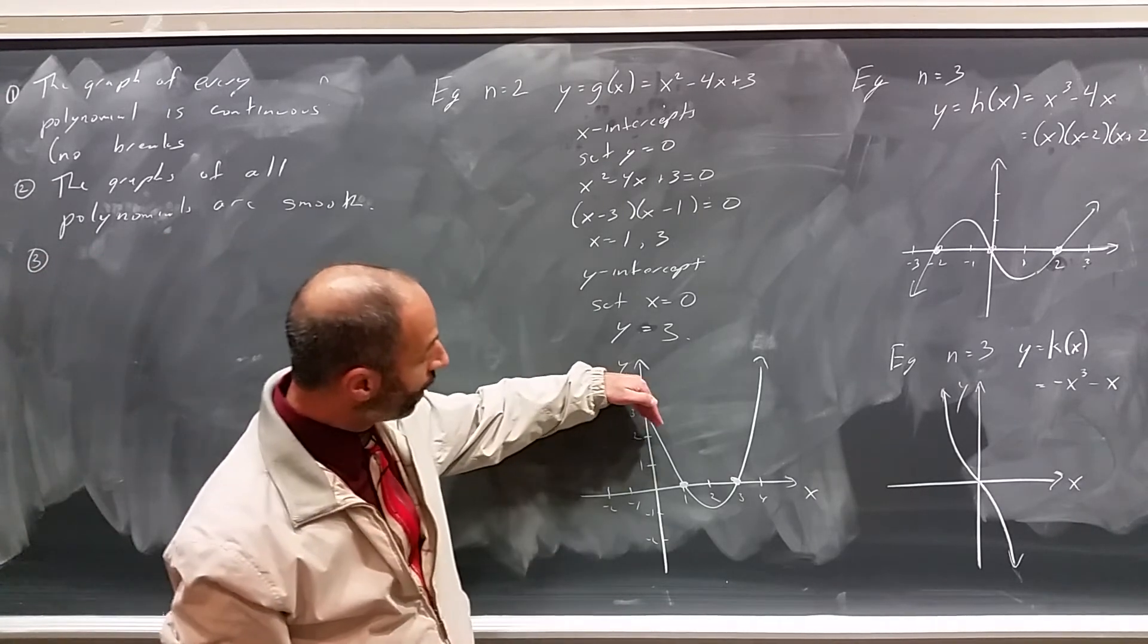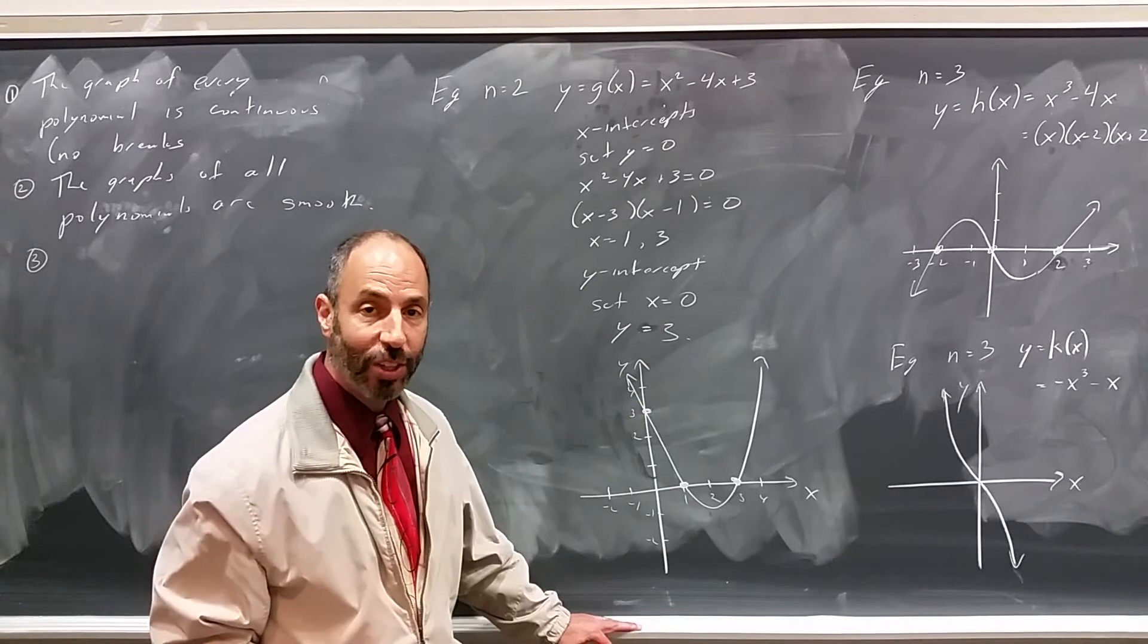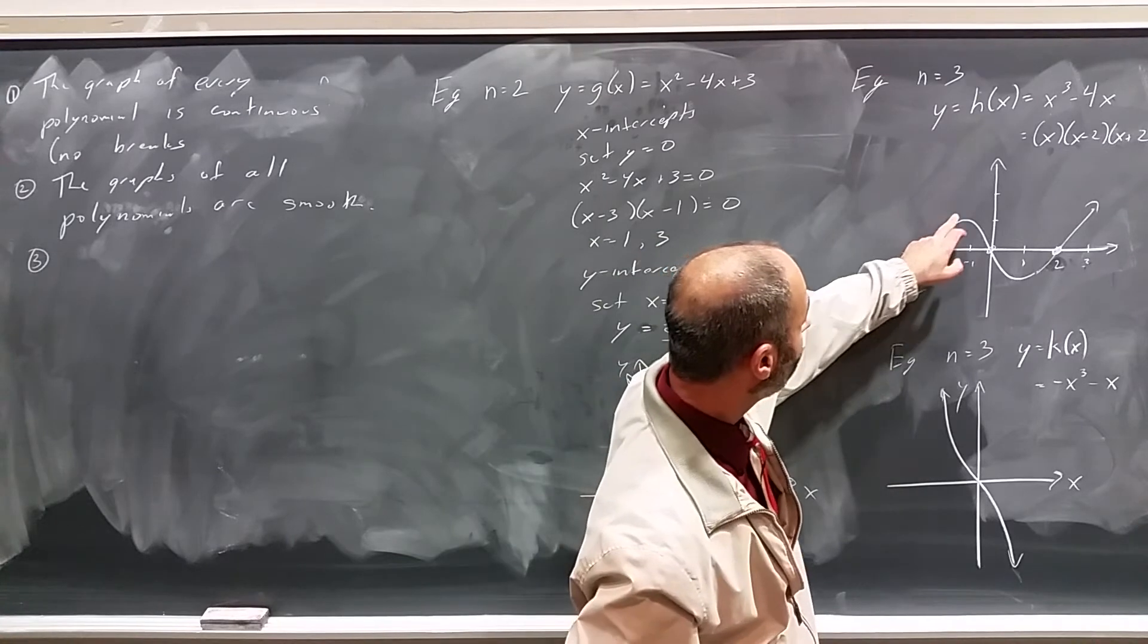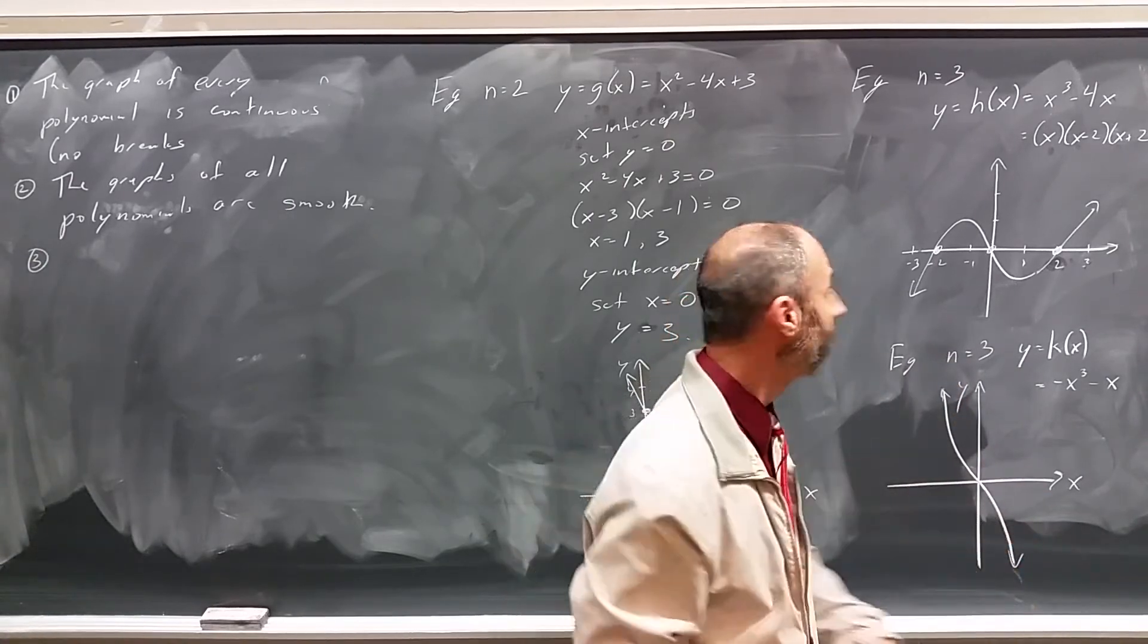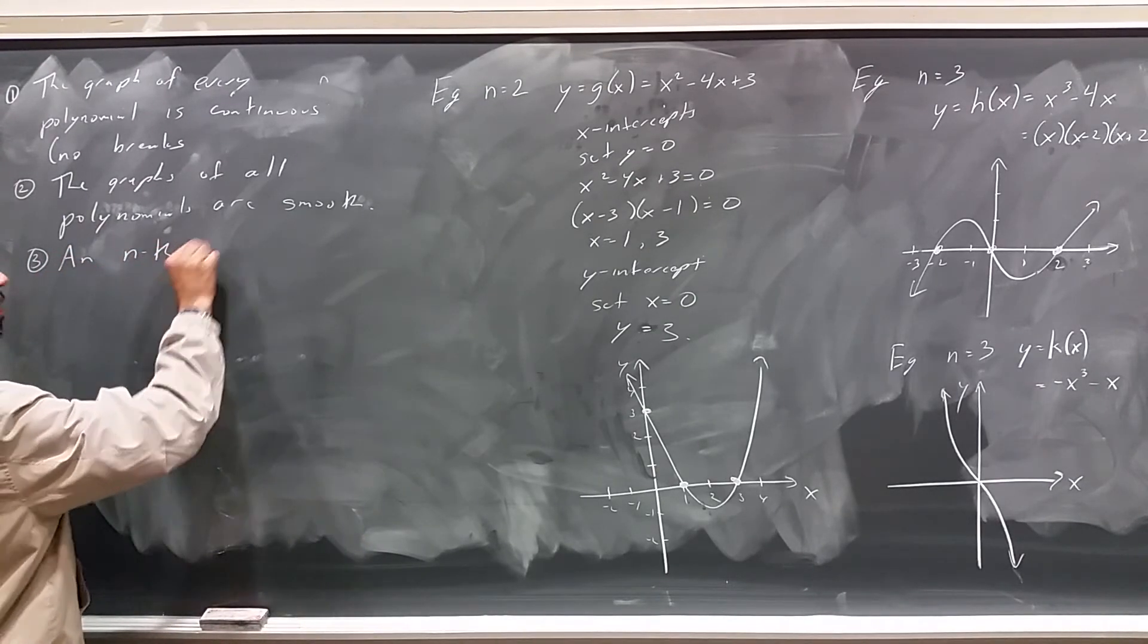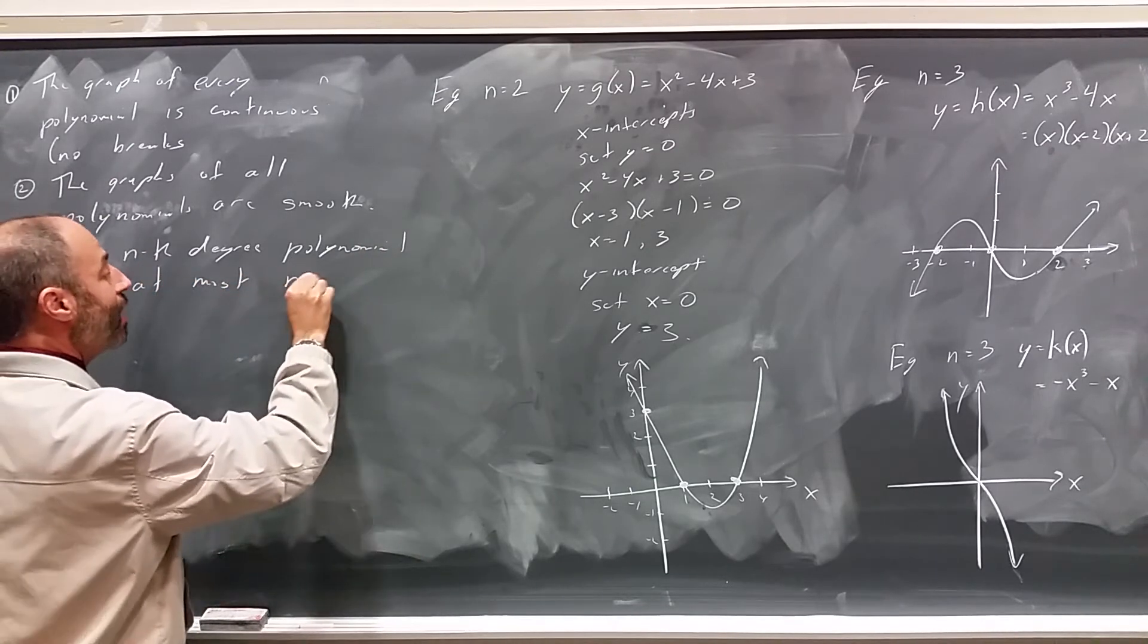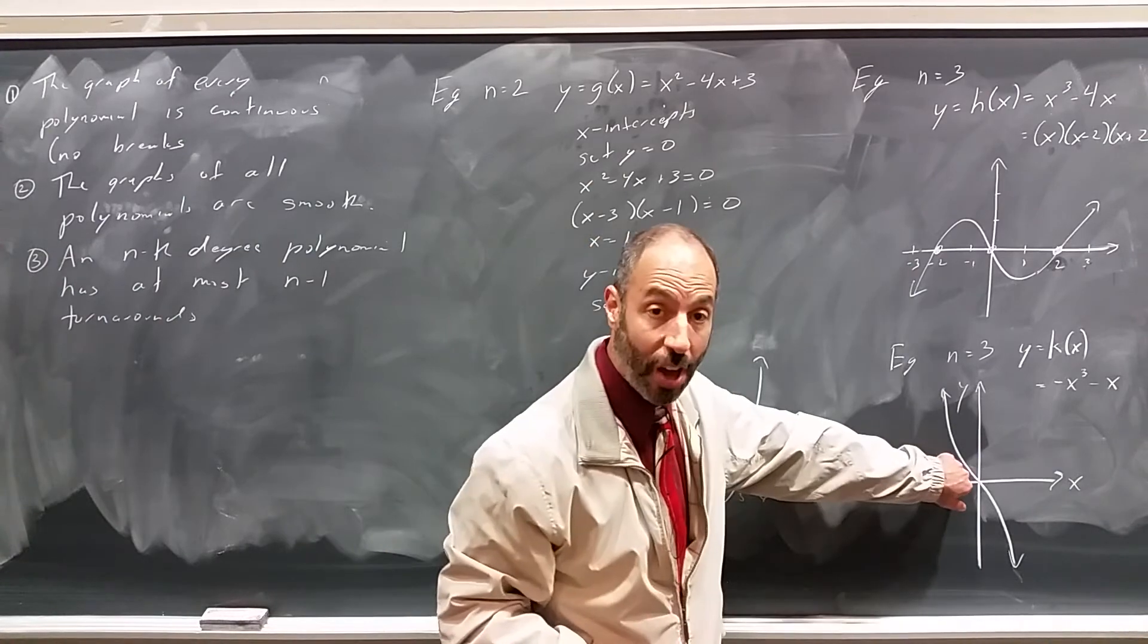We can see that the second degree polynomial goes from downhill to uphill. What we have here, a pre-calculus book might call a turnaround. So this graph has one turnaround. It's a second degree polynomial with one turnaround. Here we have a third degree polynomial with one, two turnarounds. And here we have a third degree polynomial which has no turnarounds at all. So, an nth degree polynomial has, at most, n minus 1 turnarounds.